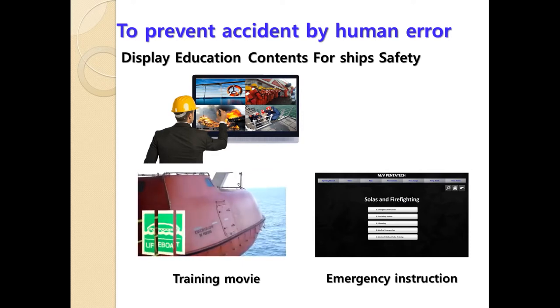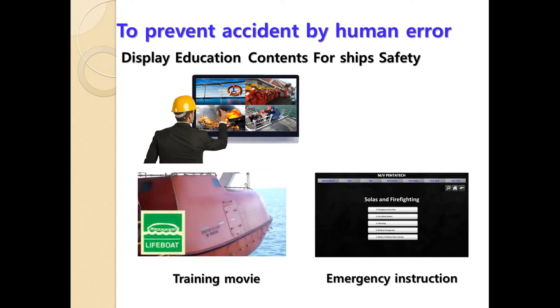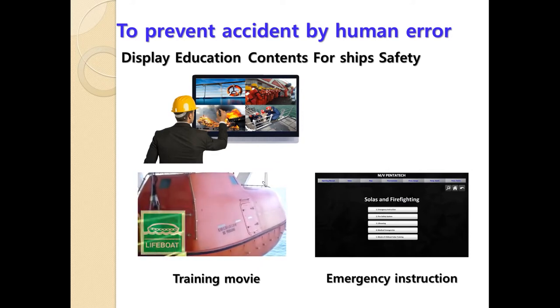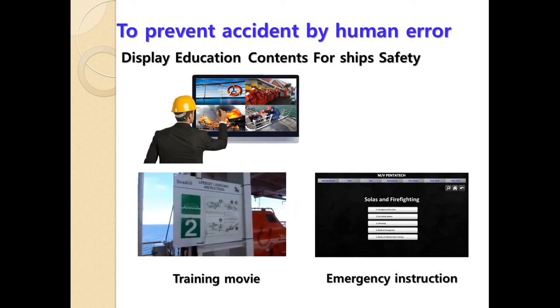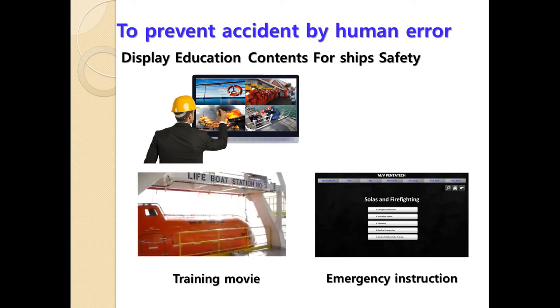TSEbook helps crew understand how to act in emergency situations. For example, the West Capricorn has four 90-person lifeboats: lifeboats 1 and 2 are forward, and lifeboats 3 and 4 are on the stern.